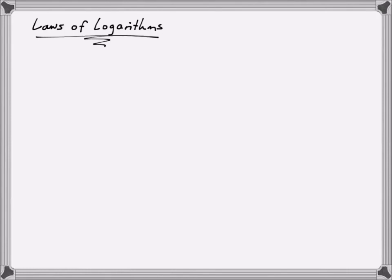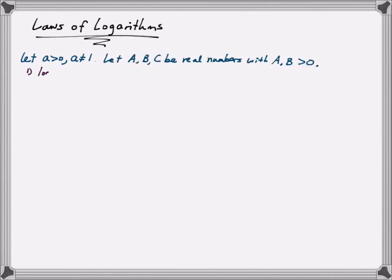We're going to assume that a is a number that is greater than 0 and not equal to 1. Also assume that capital A, B, and C are real numbers, with A and B strictly greater than 0. Then we have our first rule, which says that the logarithm of base a of capital A times capital B is equal to the log of base a of capital A plus the log of base a of capital B. This is to say that the log of a product is equal to the sum of two logs.